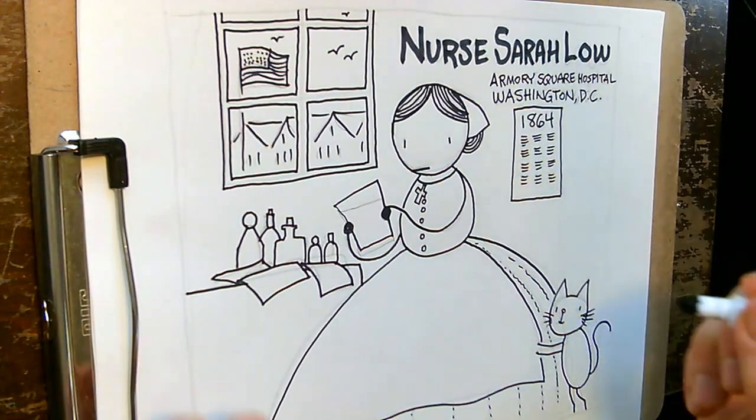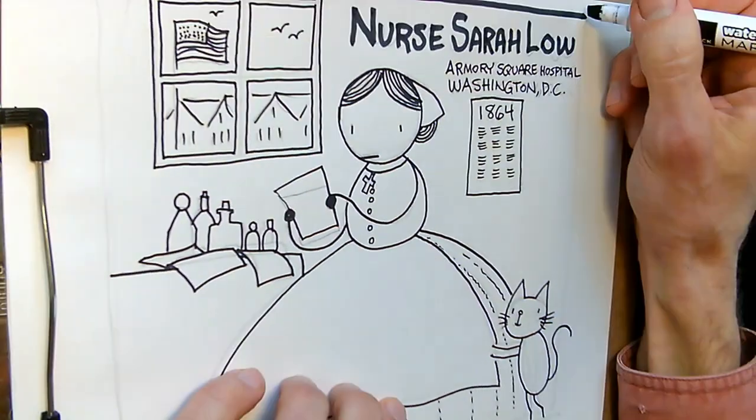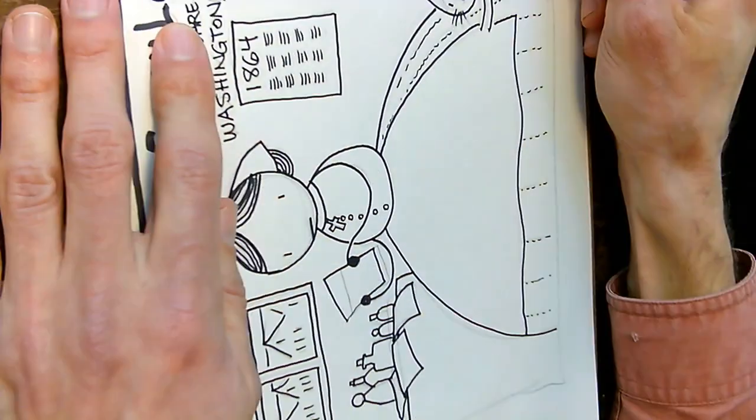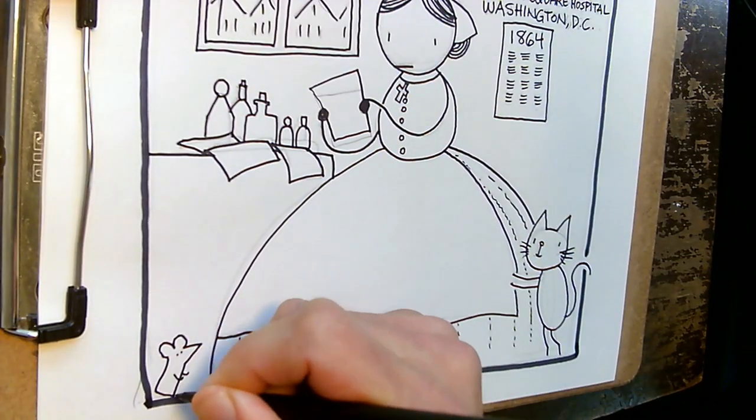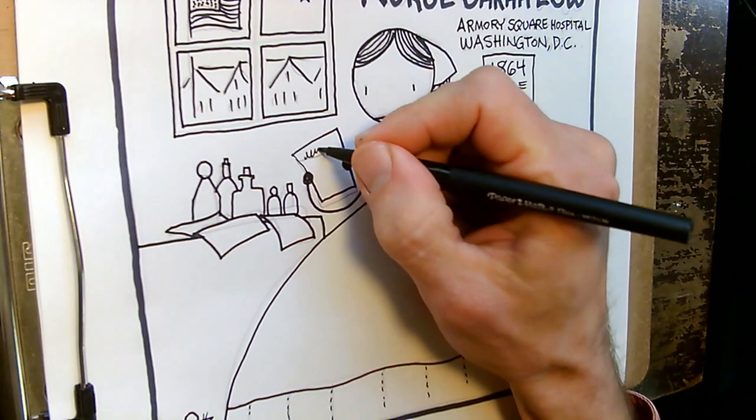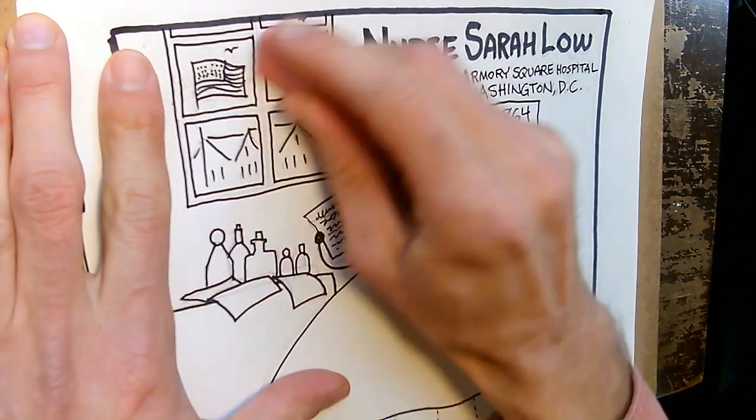Now this inking is really sped up of course, you're going to want to ink much more carefully than this. You know I'm kind of tempted to put a mouse in the corner there to kind of balance the cat. A little writing on the letter and we'll erase all our pencil lines.